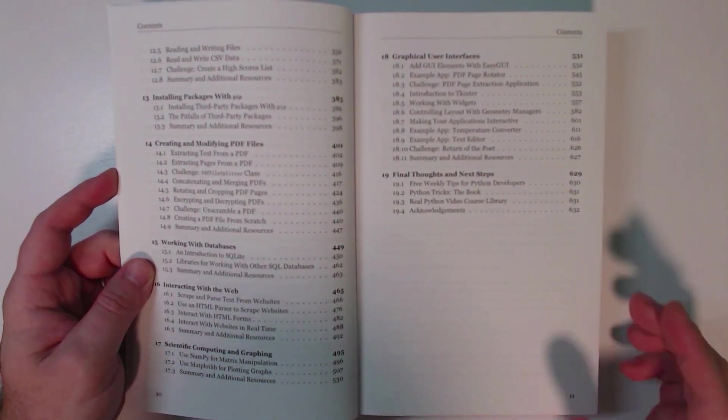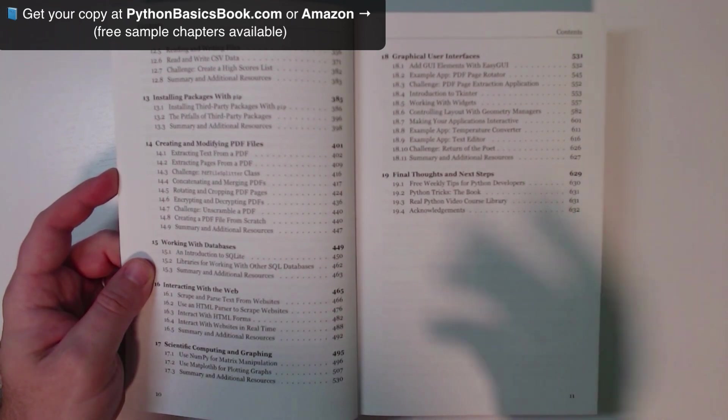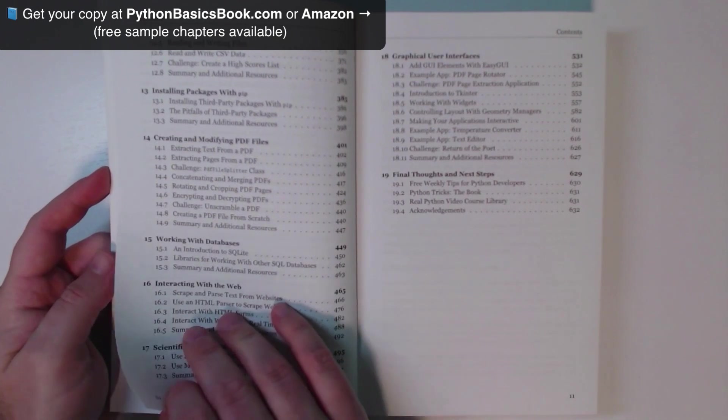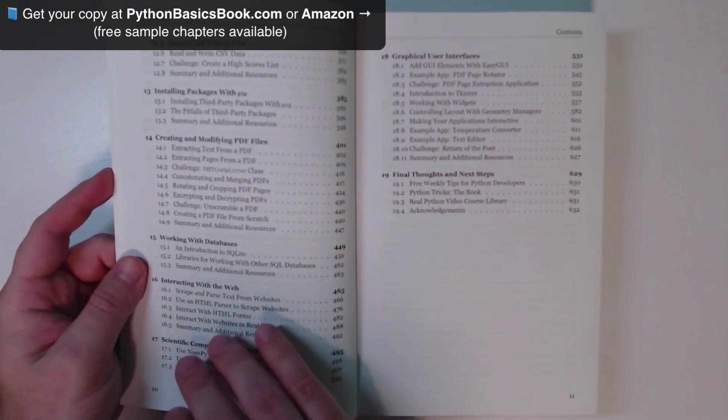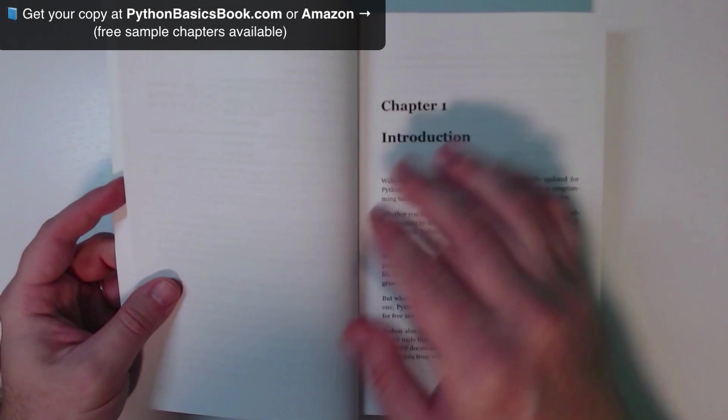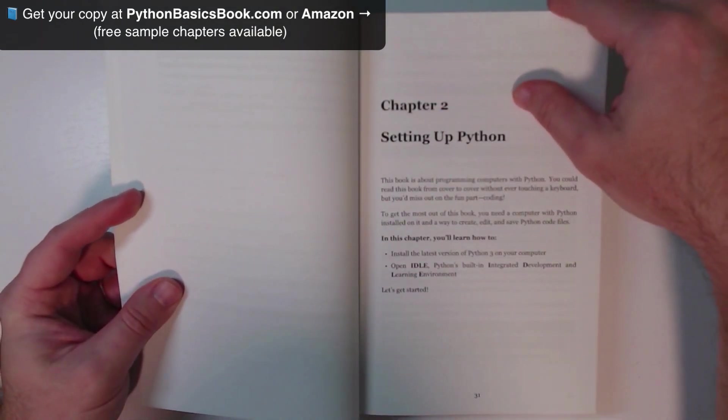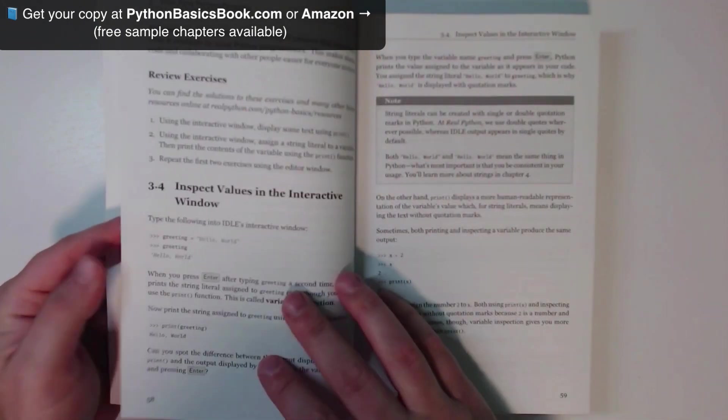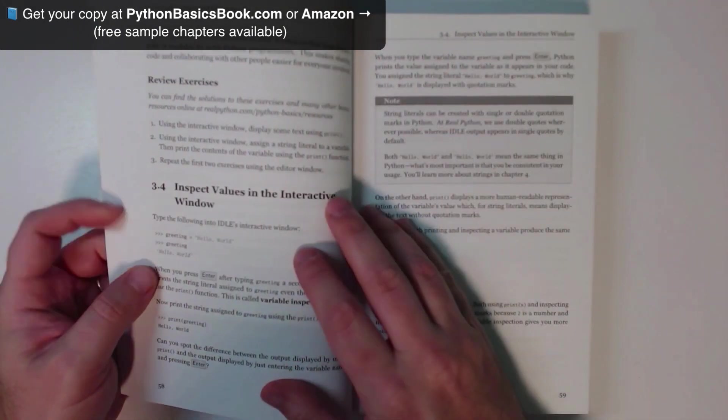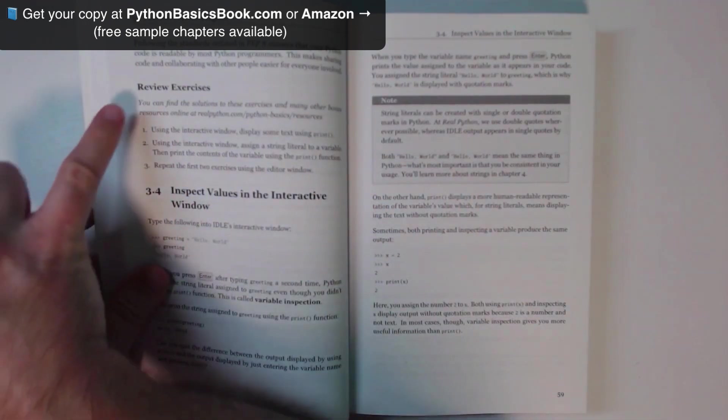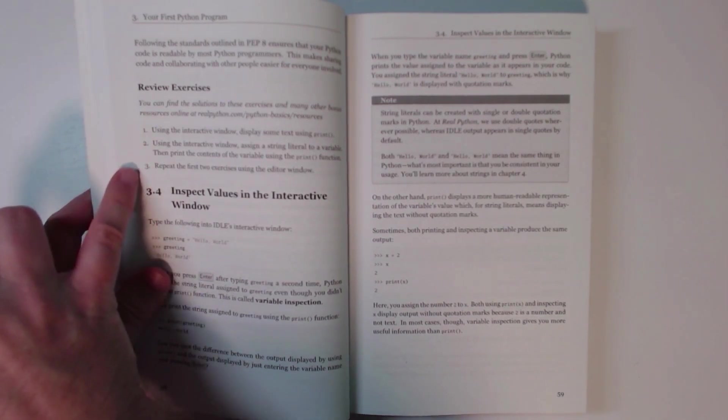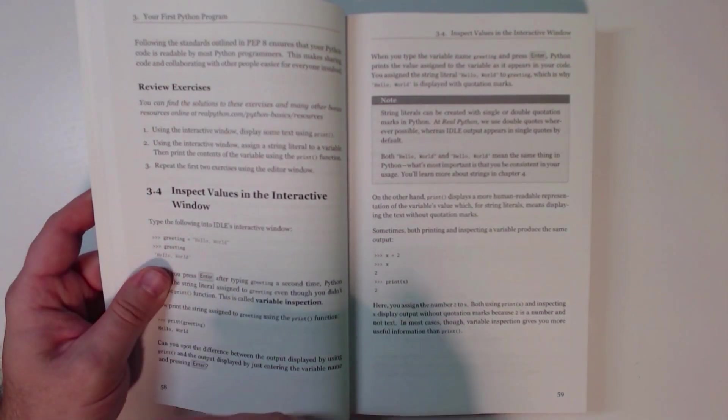One of my favorite things about the book, and this is something that really goes back to Fletcher's version, is that each chapter, or almost every chapter, has a challenge in it. So at the end of each section, let me jump to an example section here. So here is a section from chapter three, writing your first program. You'll see there are some review exercises. So each section has some review exercises, and we do have a GitHub repo available with the solutions to these exercises.